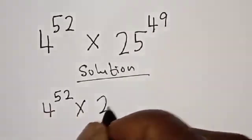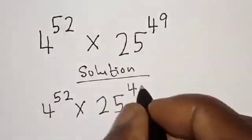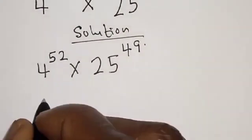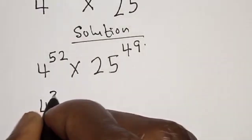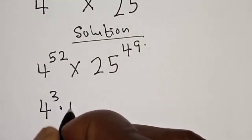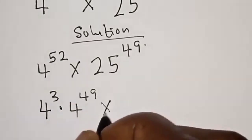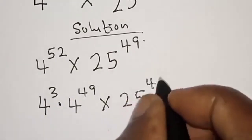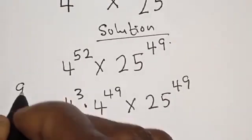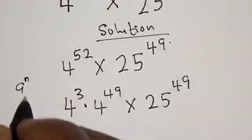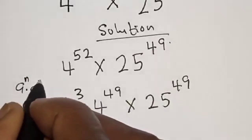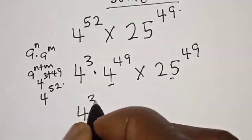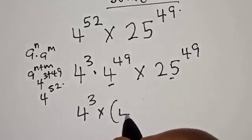4 raised to power 52 is simply 4 raised to power 3 multiplied by 4 raised to power 49, then multiplied by 25 raised to power 49. Recall that a raised to power n multiplied by a raised to power m gives a raised to power n plus m.